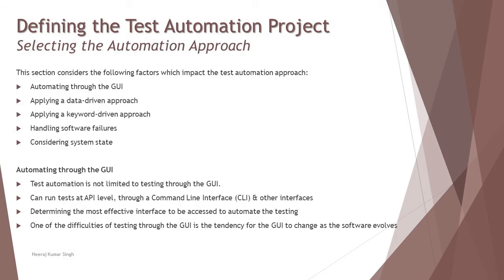Further, we are talking about selecting the automation approach. We have different approaches available for automating a test — for example, automating through GUI, applying a data-driven approach, a keyword-driven approach, handling software failures, and considering the system state. In simple terms, there are certain golden rules used as part of automating a particular test, and we need to highly comply with those principles so that our automation does not turn into a failure or become more cost-expensive.